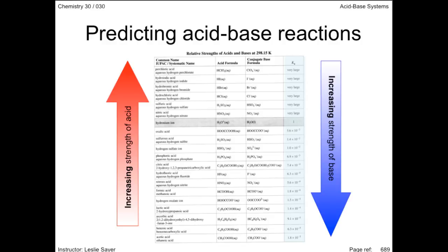If you think this setup looks familiar, you'd be right. The table of reduction half-reactions is similarly displayed, showing the strongest oxidizing agent at the top left and the strongest reducing agent on the bottom right. Additionally, it's more than a convenient coincidence that predicting acid-base reactions has to do with the position of the acid on this table in relation to the base.